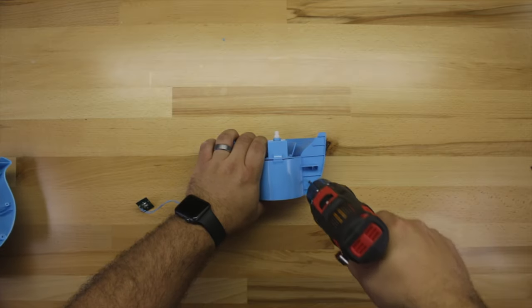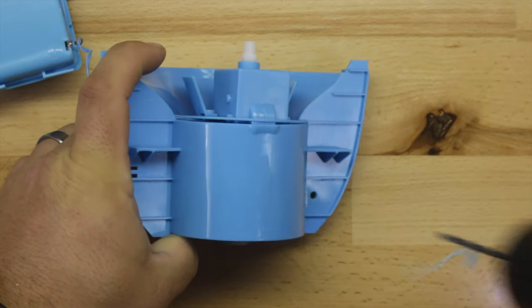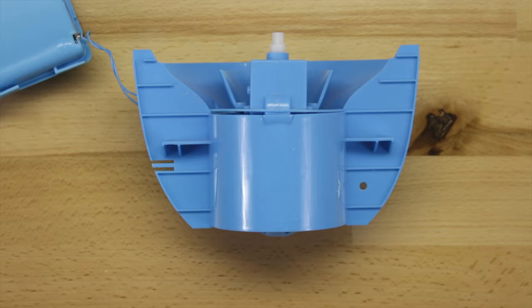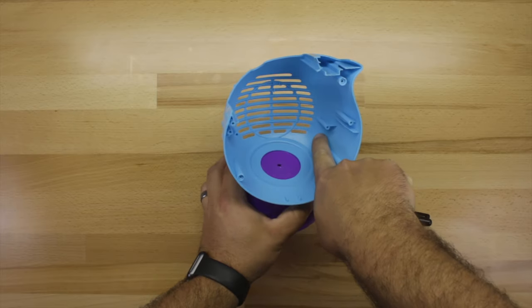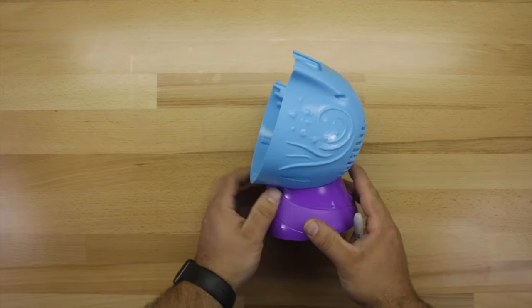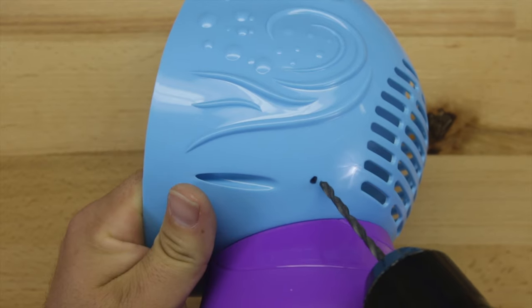Next we need to drill a hole so that our 3.5mm headphone jack can get to those wires. We're going to drill one hole in the bottom right hand corner of the fan assembly and one hole in the bottom right corner of the housing assembly itself. A great place to do that is behind the bottom right screw hole.